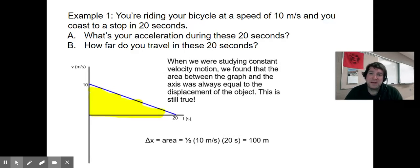Now, if I wanted to answer part B, how far do we travel in these 20 seconds? Something that we studied when we were learning about constant velocity motion was that the area in between the graph and the axis was always equal to the displacement of the object. And this is still true. So I shaded in pretty badly, but I shaded in in yellow that shape in between the blue line that represents the graph and the axis. And so if I'm trying to find the displacement from 0 seconds to 20 seconds, then I'm taking the area from 0 seconds to 20 seconds. And the shape of that area is a triangle.